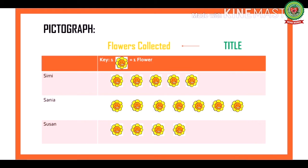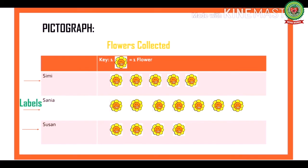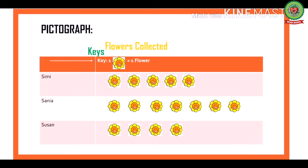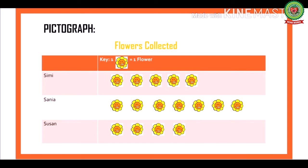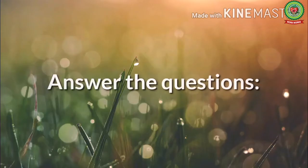You must know that every pictograph has a title, which tells us what the pictograph is about. The pictures in the pictograph tell us about the given number of objects. It has labels which tell us what kind of data is shown. It also has a key which tells us the number that each picture is equal to. We should be able to collect information from a pictograph by reading it. From this pictograph, we can say that Simmi collected 5 flowers, Sanya collected 7 flowers, and Susan collected 4 flowers.